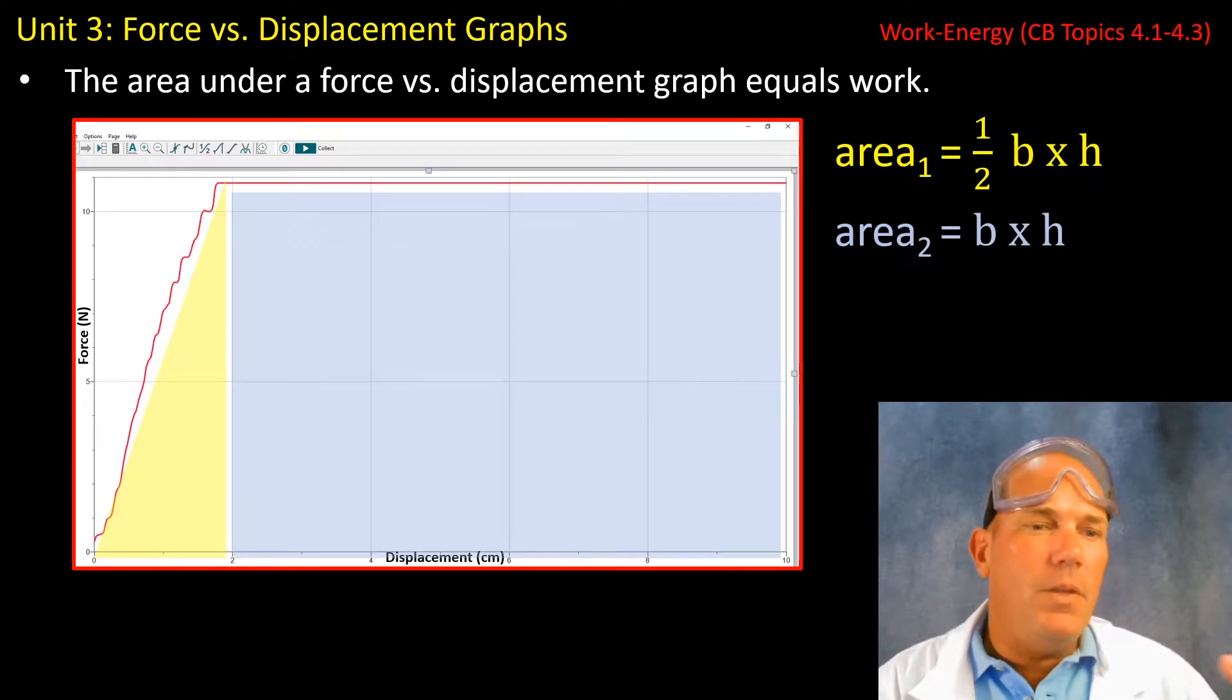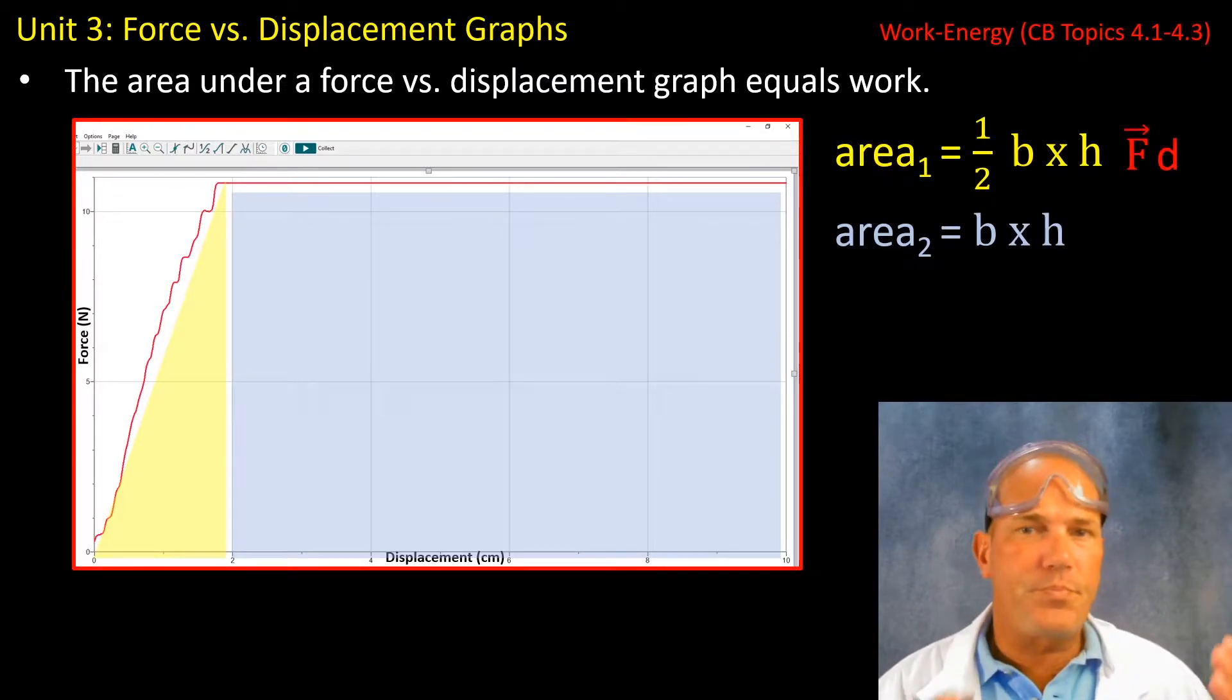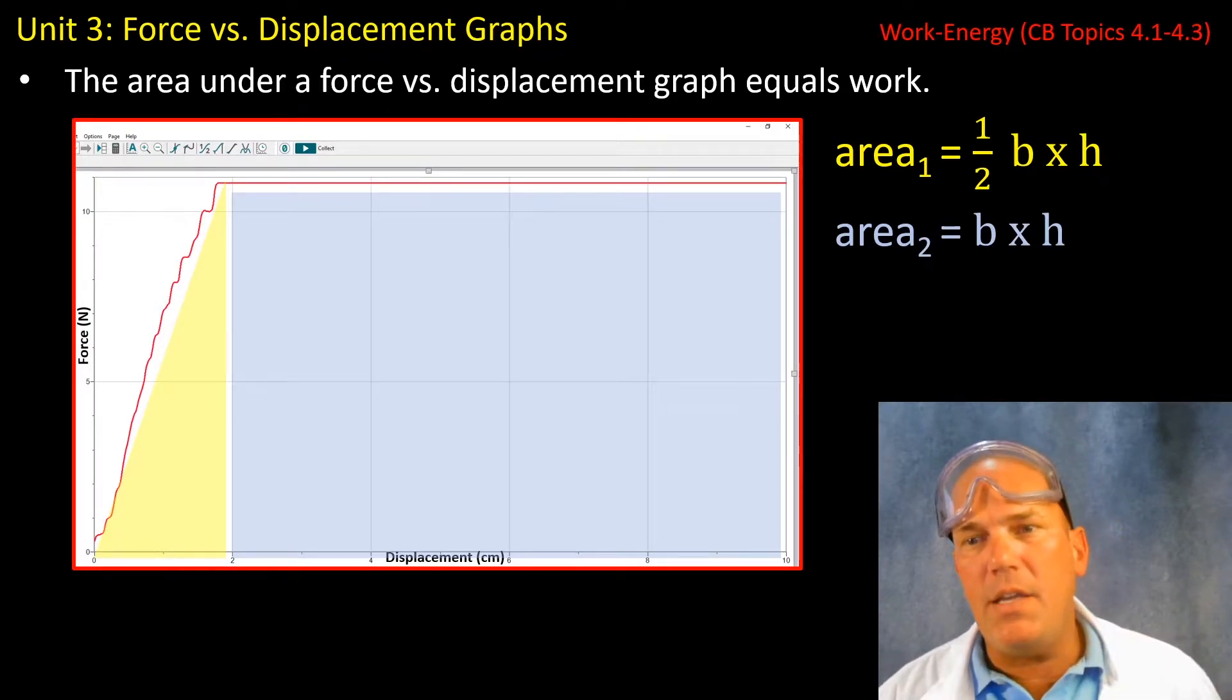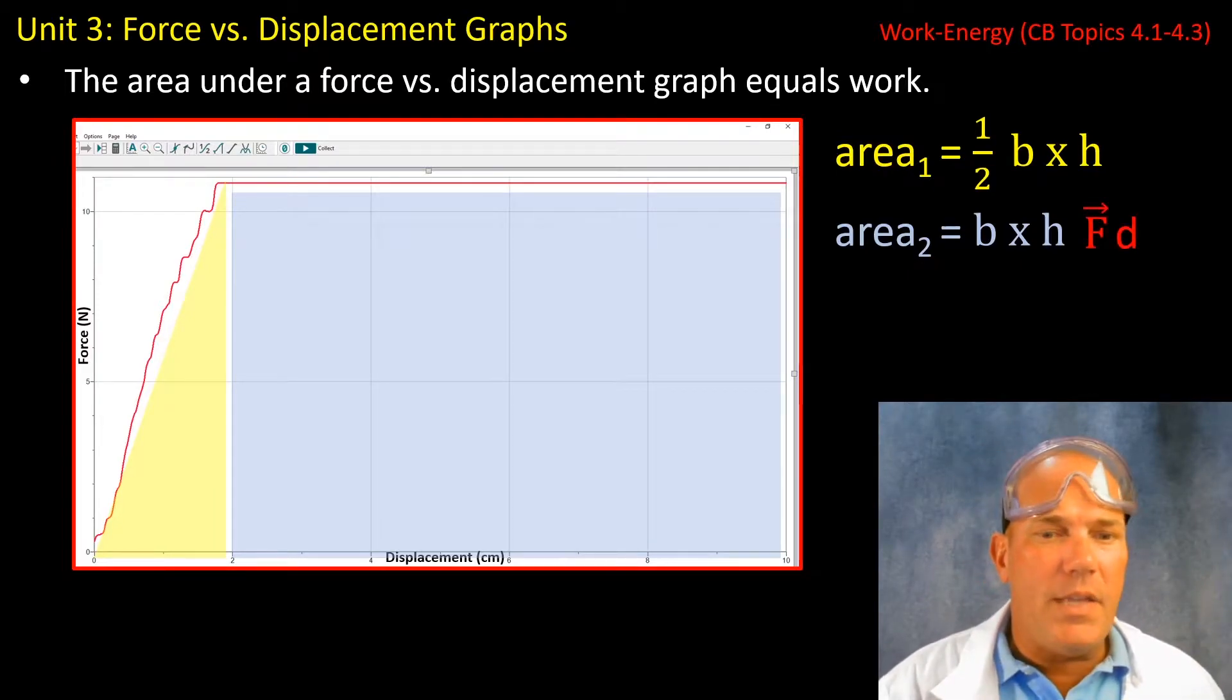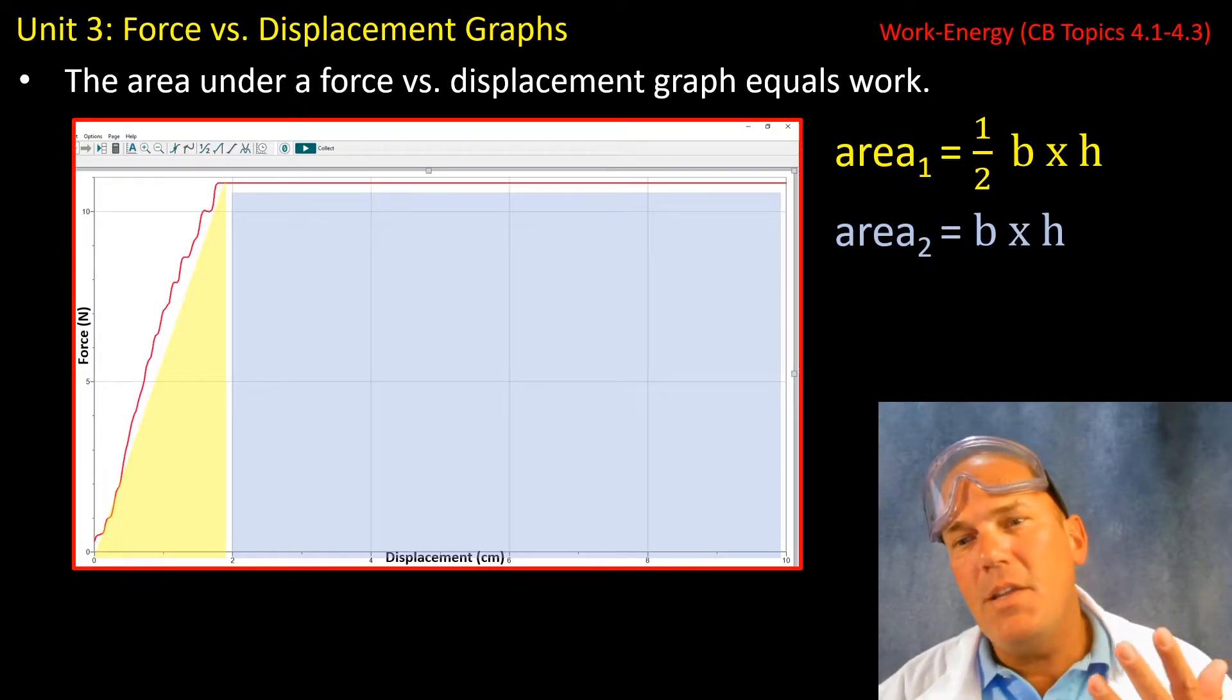So if we look at what is on the x-axis and on the y-axis, we have force multiplied by the distance. Likewise, if we look at our second area here, we have again on the x-axis distance on the y-axis force. Force times distance is work.